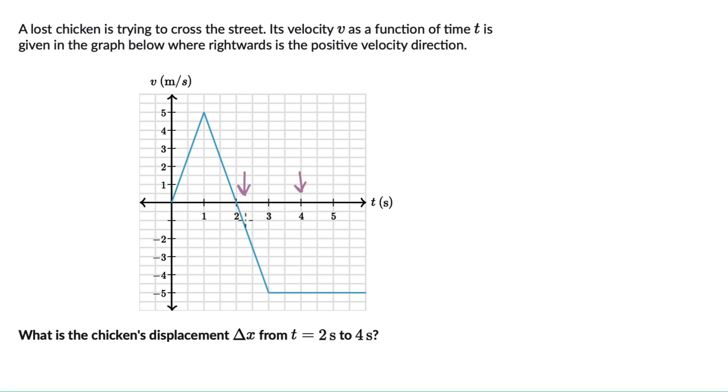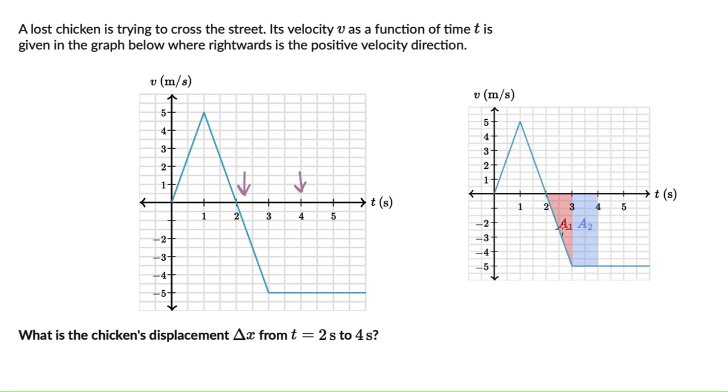So if we have a look at the curve, we can see two shapes: one sort of a triangle like this and one a rectangle. If we try and shade the areas, this is how they can look like, A1 and A2.